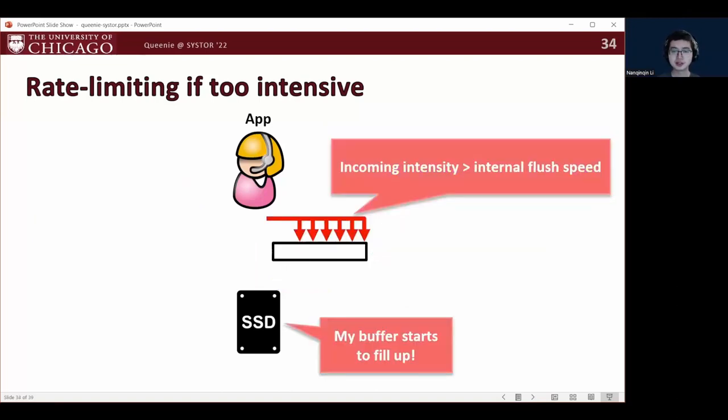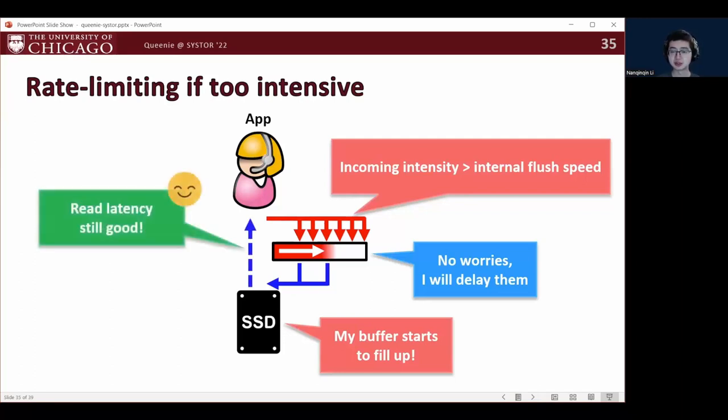Otherwise, if the shame layer sees that the incoming write intensity is greater than the internal flush speed, it temporarily holds the incoming writes in its buffer and then gradually releases them so that the SSD is not overly stressed. And as a result, the application can also get good links because much of the IO contention inside the SSD is eased by the shame layer.